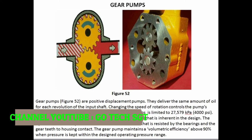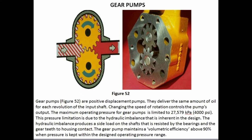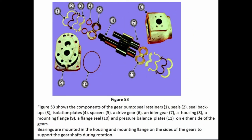Gear pumps (Figure 52) are positive displacement pumps that deliver the same amount of oil for each revolution of the input shaft. Changing the speed of rotation controls the pump's output. The maximum operating pressure for gear pumps is limited to 27,579 kilopascals (4,000 PSI). This pressure limitation is due to the hydraulic imbalance inherent in the design. The hydraulic imbalance produces a side load on the shafts, resisted by the bearings and the gear teeth-to-housing contact. The gear pump maintains volumetric efficiency above 90% when pressure is kept within the design operating pressure range.